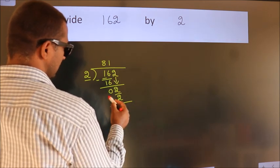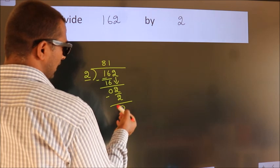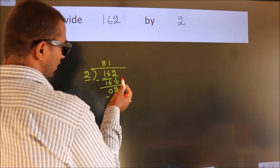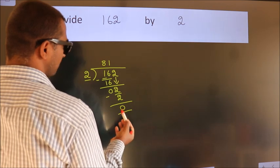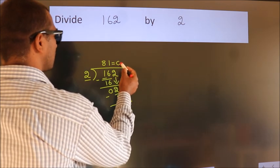Now we subtract. We get 0. After this, no more numbers to bring down and we got remainder 0. So this is our quotient.